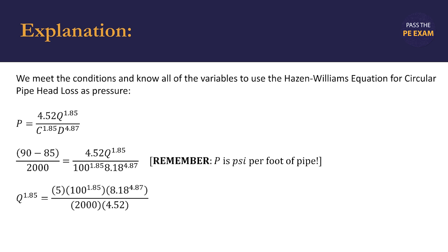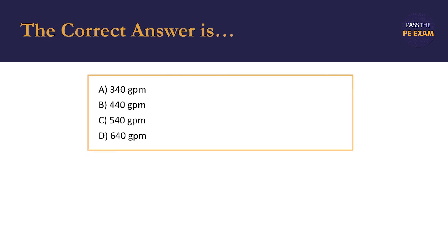Q is our only variable left, so we continue to solve for Q by simplifying. After a few steps of simplification, we ultimately find Q to be equal to 438.65 gallons per minute. This is very close to answer B, 440 gallons per minute, and we can assume the small discrepancy to be resultant from a rounding error. So, we choose answer B, 440 gallons per minute, and this is the correct answer.